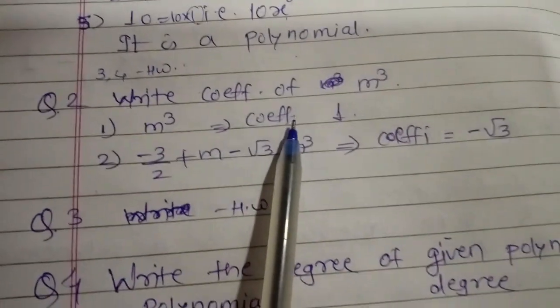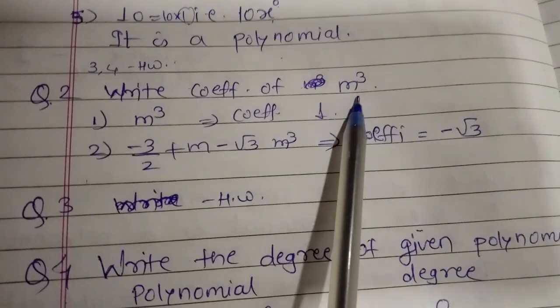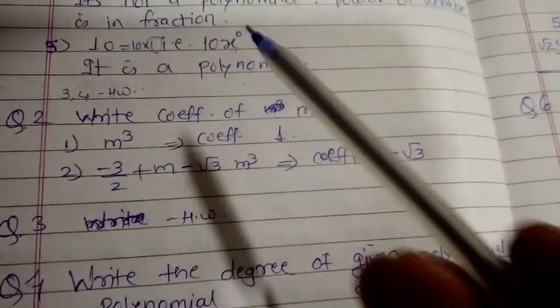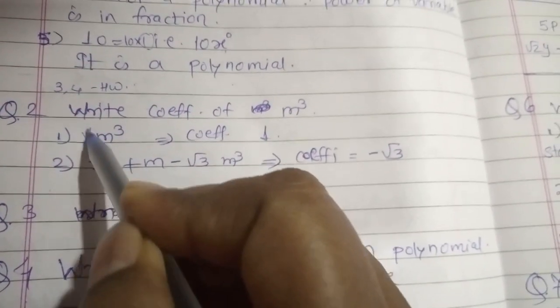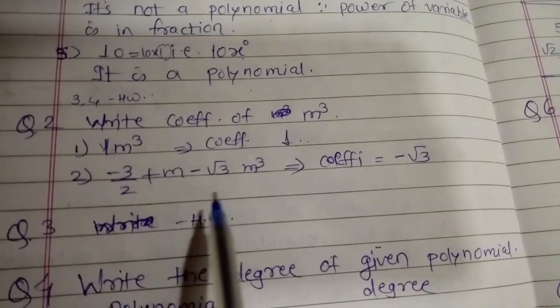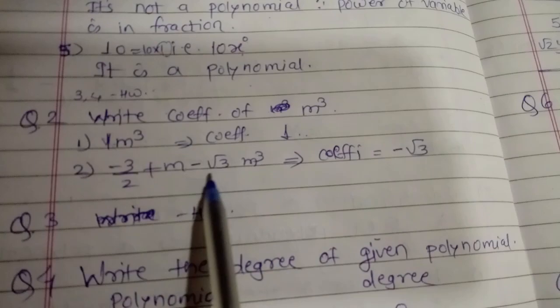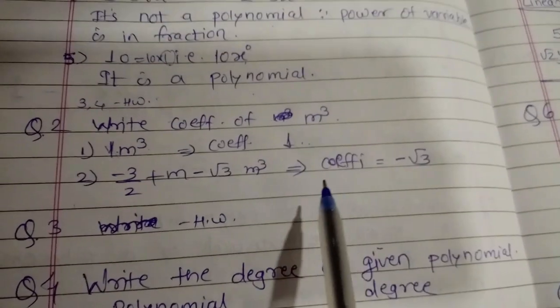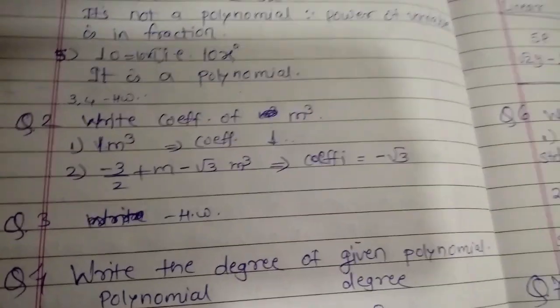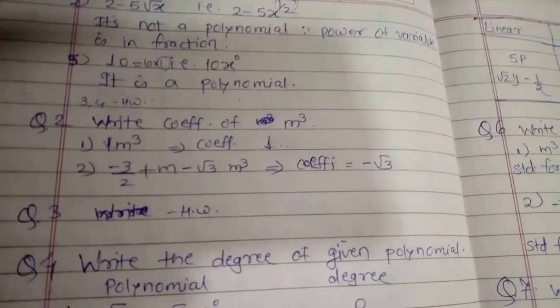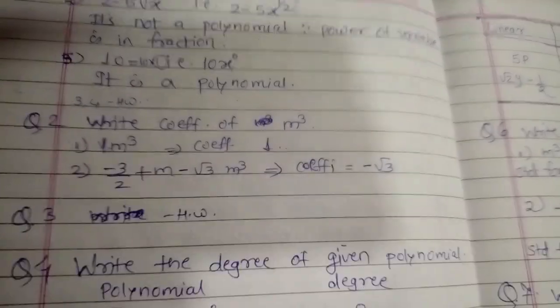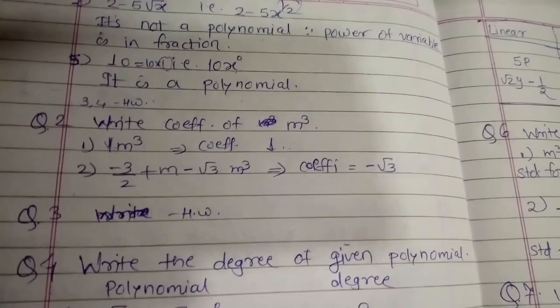Question number 2: write the coefficient of m^3. In the first term m^3, there is no explicit coefficient, so the coefficient is 1. In the example -3/2 + m - √3 m^3, the coefficient of m^3 is -√3. Question number 3 — write polynomials in x using given information (monomial with degree 7, binomial with degree 35) — is left as homework since answers can vary.